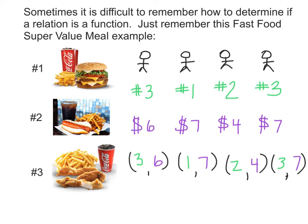What's the problem? This person ordered value meal number 3 and was charged $6, whereas the fourth person also ordered value meal number 3 but was charged $7. What we've got here is a single input that has two different outputs — 6 and 7. Therefore, this is not a function.